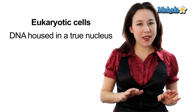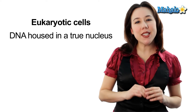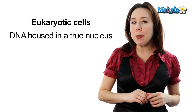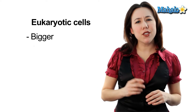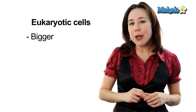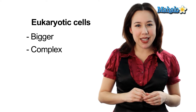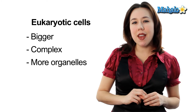Now let's talk about the differences between these two major types of cells. Eukaryotic cells are going to have a true nucleus, which means the DNA is going to be housed in a membrane-bound organelle. Also, eukaryotic cells are generally much bigger than prokaryotic cells and they have much more complexity and a lot more membrane-bound organelles.